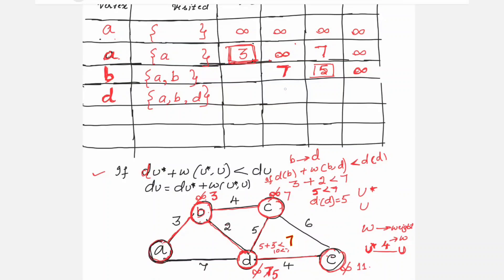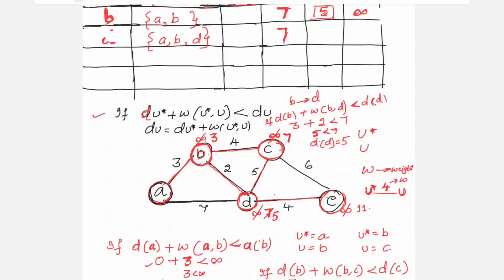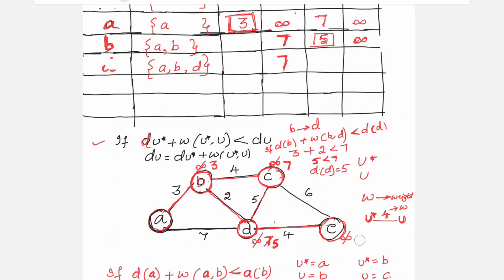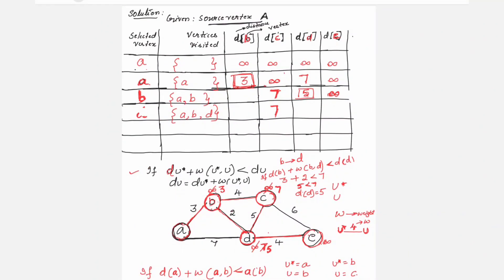Our job is to always keep the minimum value, so retain d(C) = 7. Next, for D to E: the current value is infinity, as in the previous step B to E was one hop farther and written as infinity.